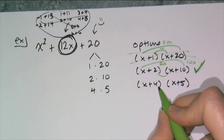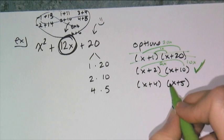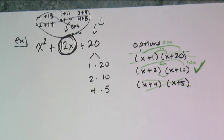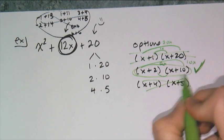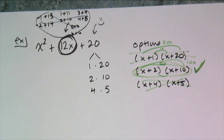So it's this one. And if I look at this one down here just to finally eliminate it, I get 4x and 5x, which is 9x. So it's not that one. So therefore this thing factored is x plus 2 times x plus 10.